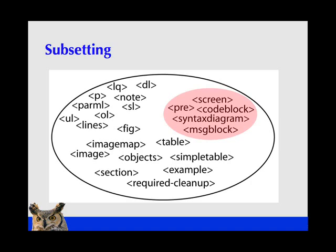So what you can do when you subset is simply remove those five elements and say these are not allowed. You can simplify your DITA content and set it up so that it is much easier to work with because you have fewer elements. Your writers are not looking at a bunch of irrelevant elements that are not needed in your content, so subsetting allows you to simplify DITA.